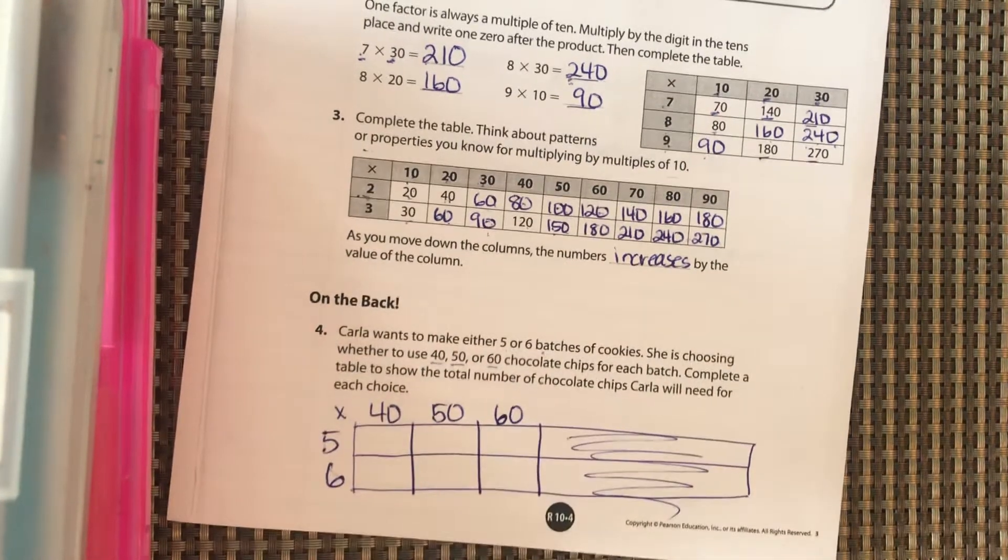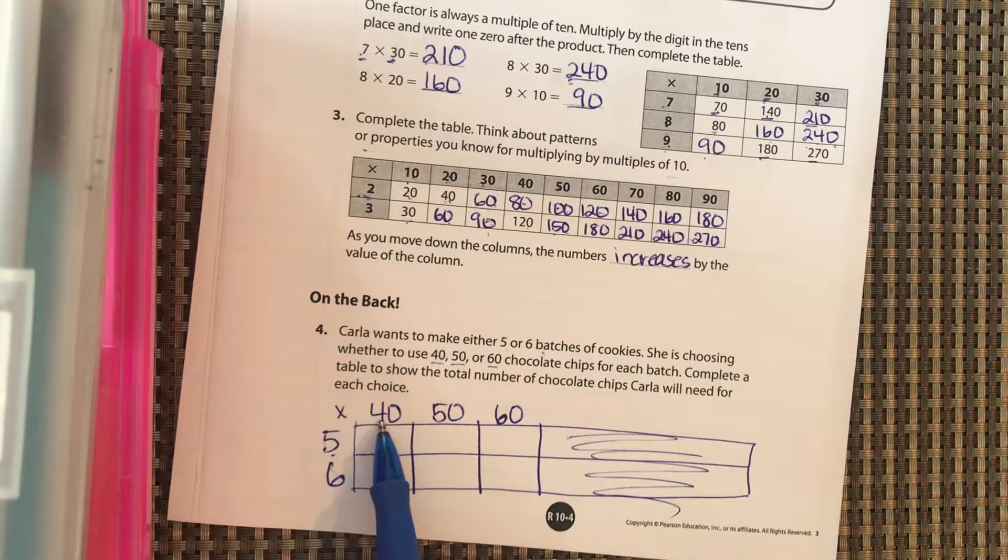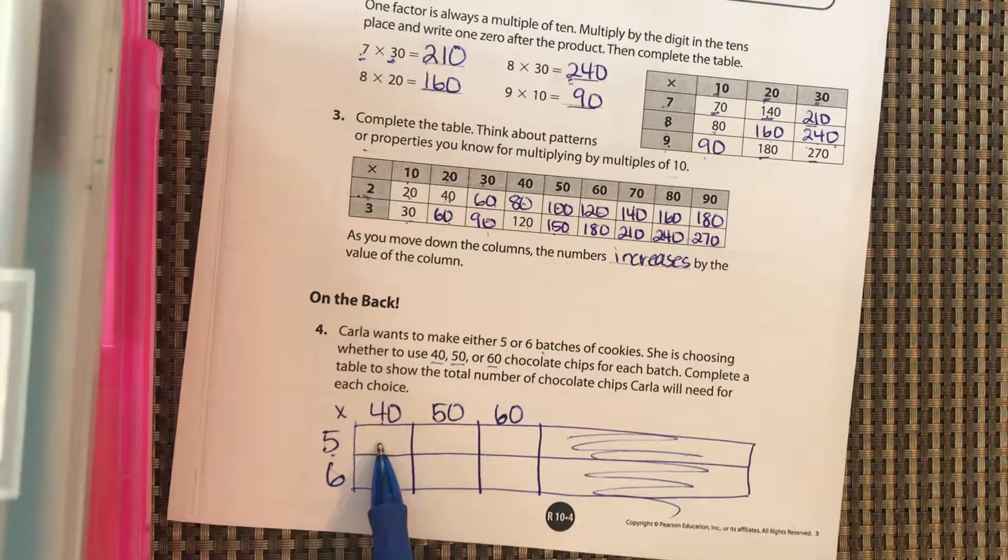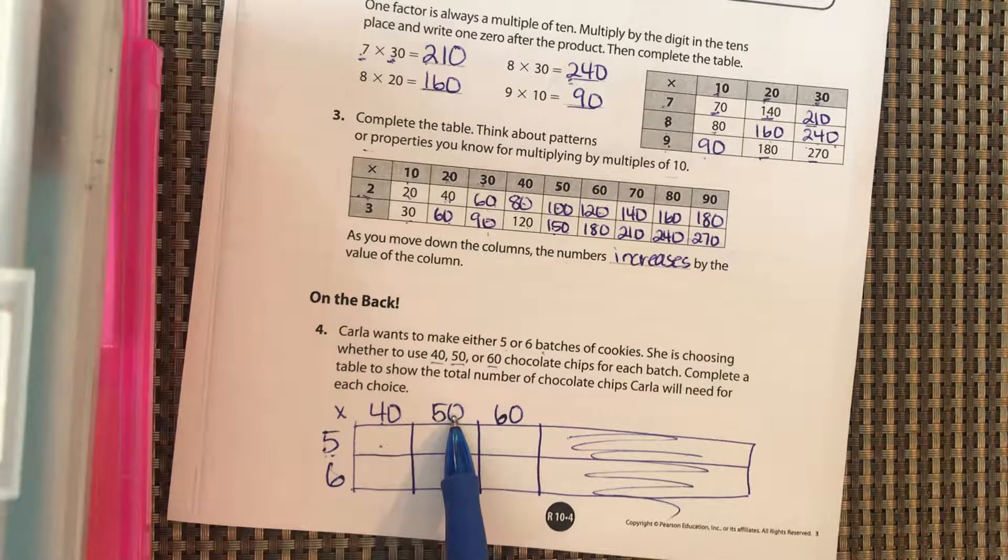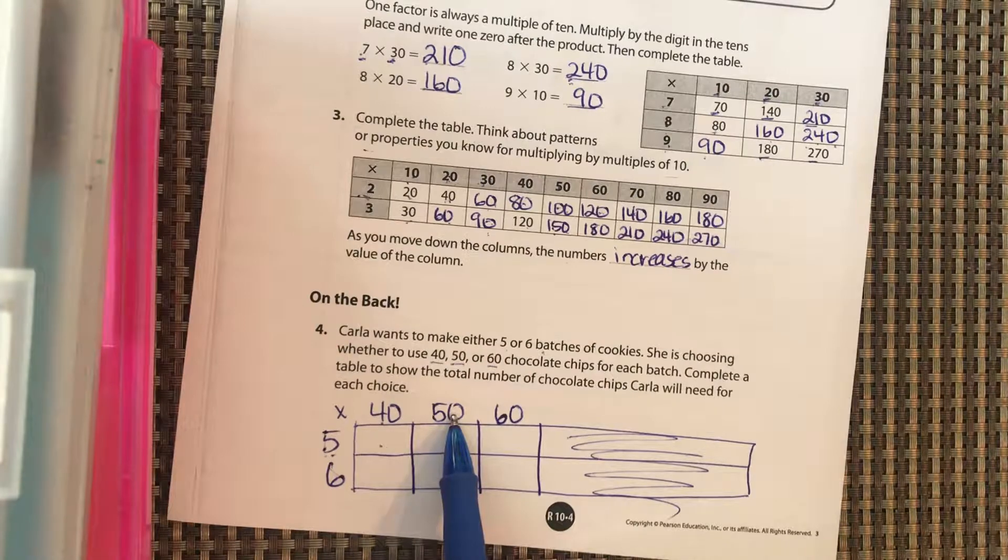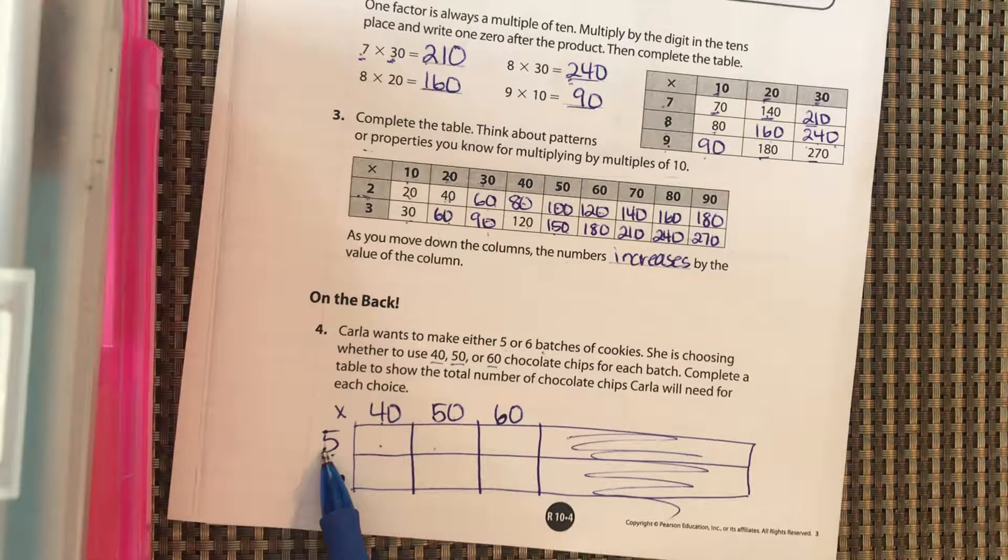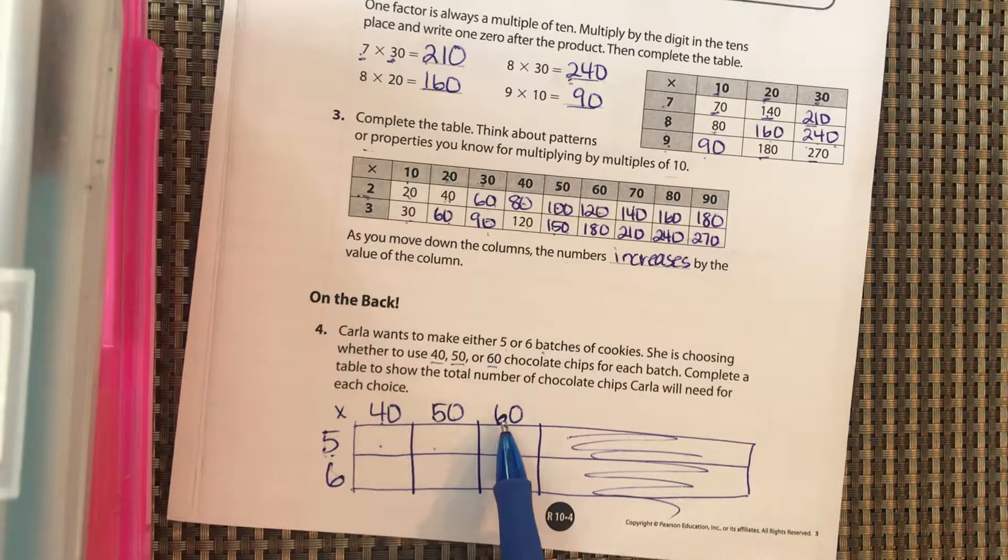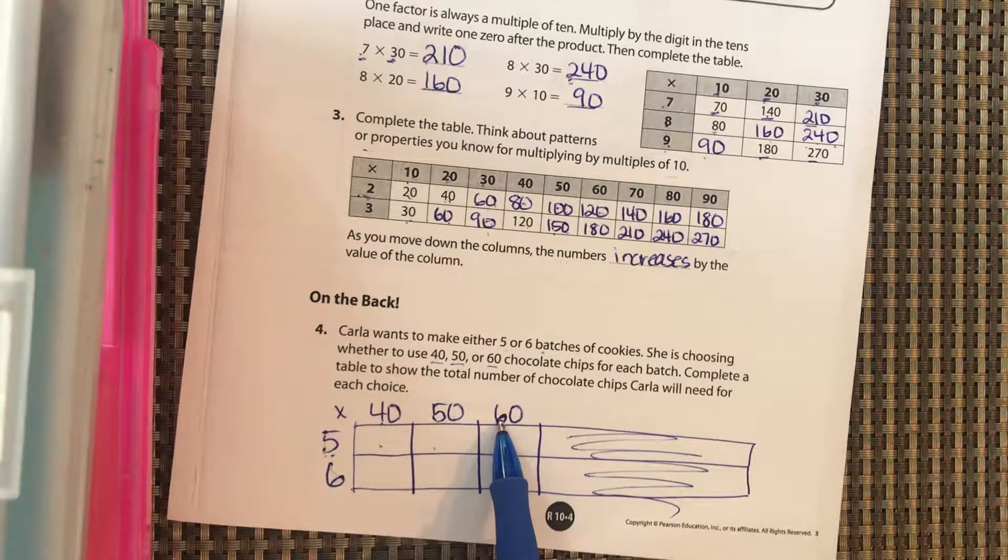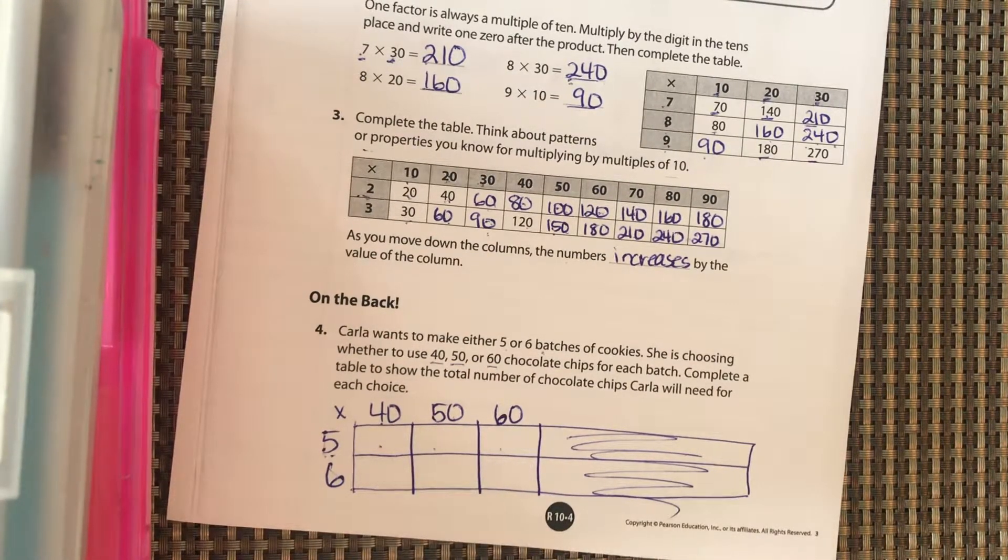Okay, so if she makes five batches of cookies and uses 40 chocolate chips, this is going to tell us how many chocolate chips she needs. She makes five batches of cookies and uses 50 chocolate chips on each batch, this is going to tell us how many chocolate chips she needs. Also, she makes five batches of chocolate cookies but uses 60 chocolate chips in each batch; this will tell us how many she needs. So fill this in, pause it and come back.